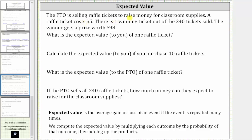The PTO is selling raffle tickets to raise money for classroom supplies. A raffle ticket costs $5. There is one winning ticket out of the 240 tickets sold, and the winner gets a prize worth $98. The first question is: what is the expected value to you of one raffle ticket? Let's answer this question on the next slide.